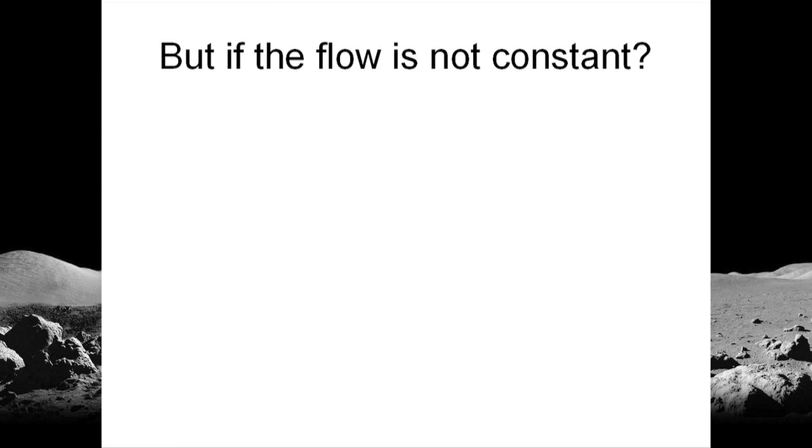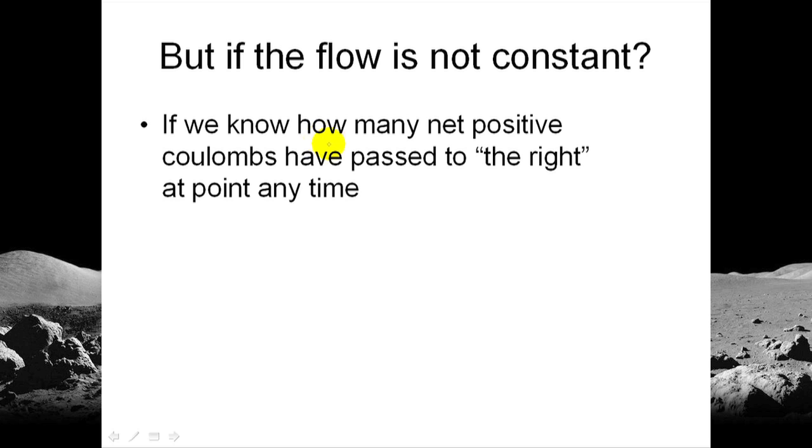All of that is fine. We measure currents as 3 coulombs per second, 10 coulombs per second, 1,000 coulombs per second. But what happens if the flow of electricity is not constant? If the current is not a constant one, sometimes it's higher, sometimes lower, sometimes may even flow in the opposite direction. If we know how many net positive coulombs have passed the checkpoint to the right at any moment, we have a function of time, q(t), the number of net positive coulombs that have crossed the checkpoint going to the right.